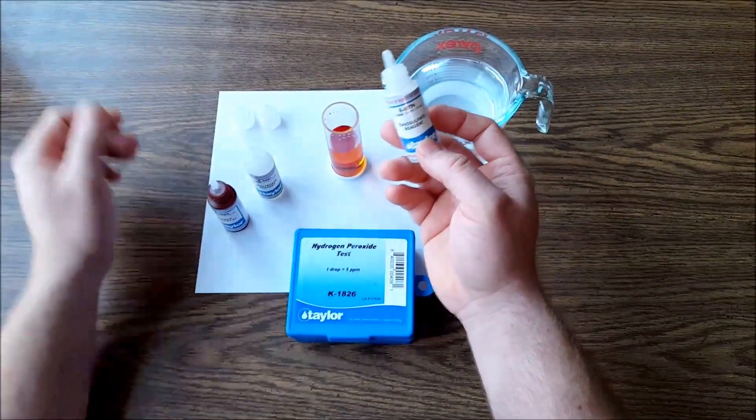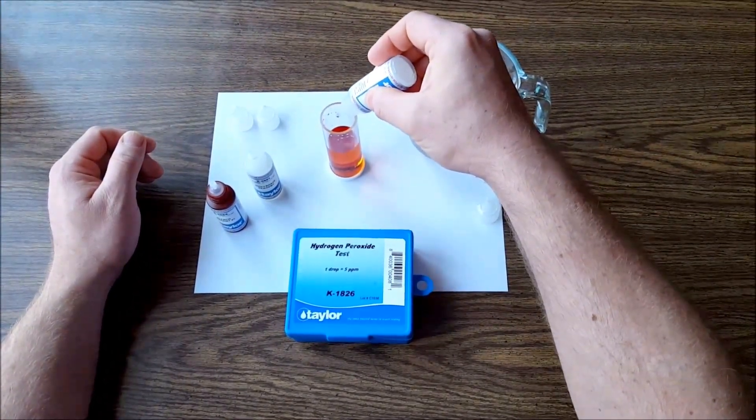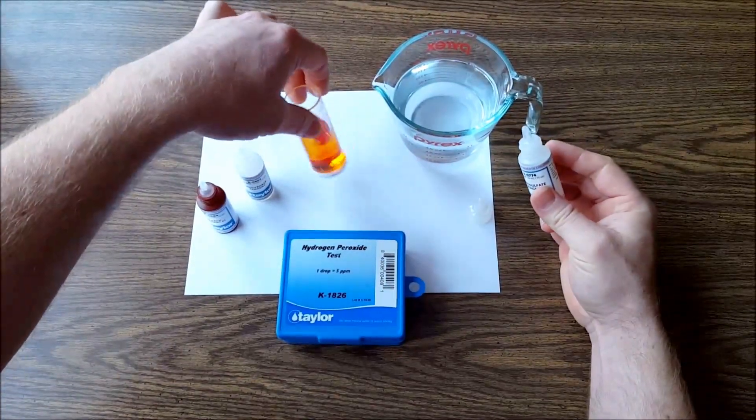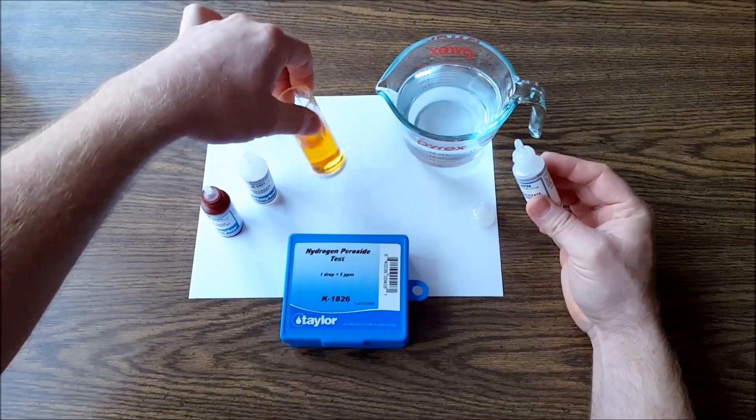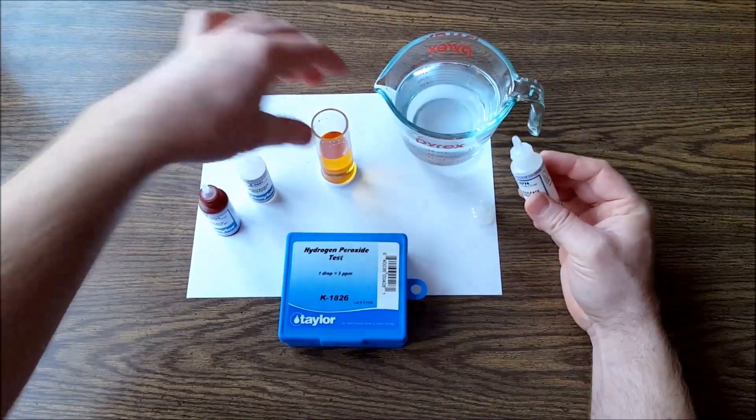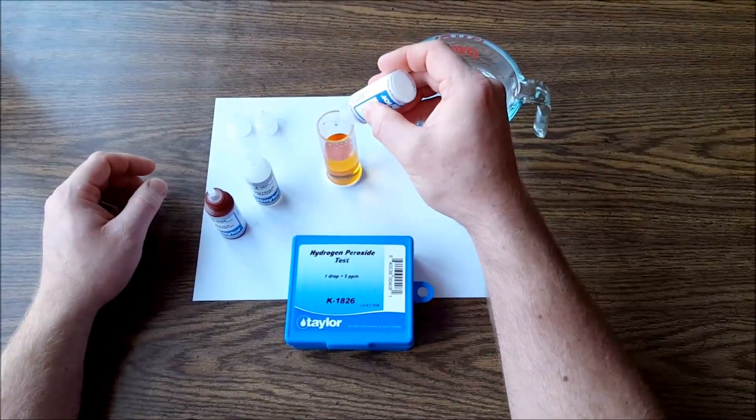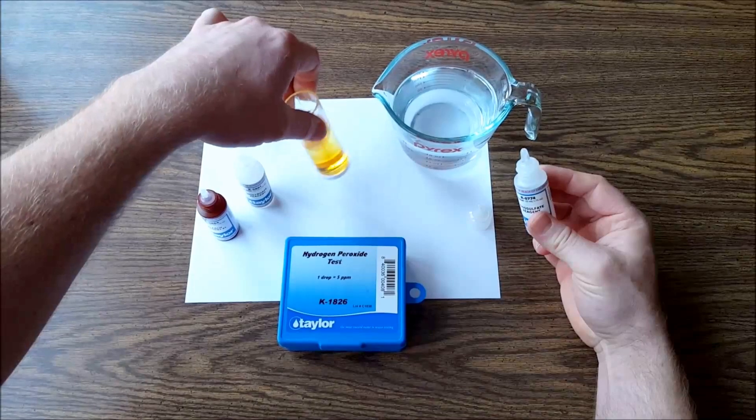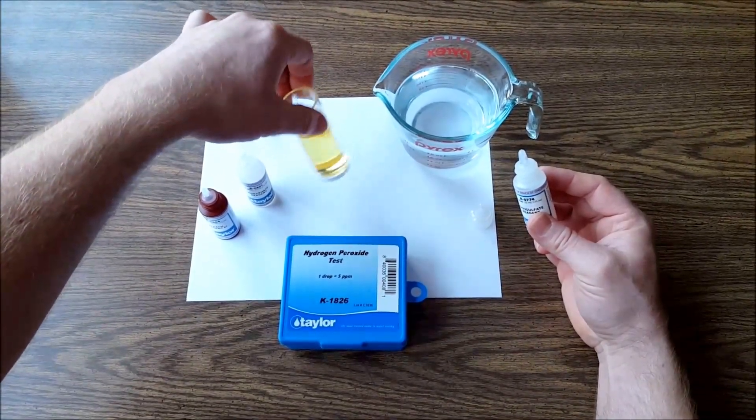So here goes 10 drops: 1, 2, 3, 4, 5, 6, 7, 8, 9, 10. That would equal 50 parts per million right there, and you can see how it clears it up really good. So that's 50. I'm gonna go five drops more: 1, 2, 3, 4, 5—I did six there. So we're at 80 parts per million and that's even better, not totally clear yet.